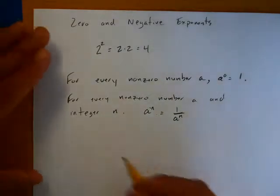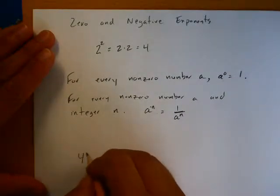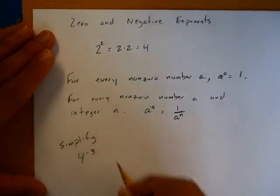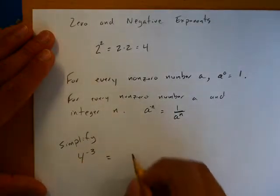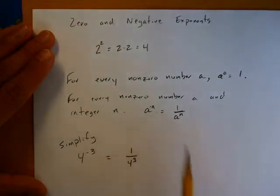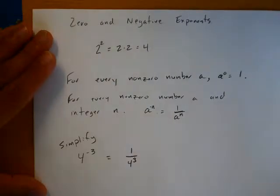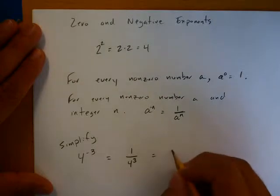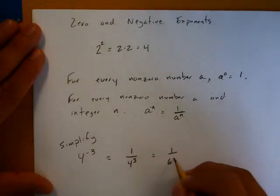So say I have something such as this and they're asking us to simplify. This guy is going to simplify to one over four to the third because we're using this move it and lose it idea. And from there, we can just expand out this denominator into one over 64.